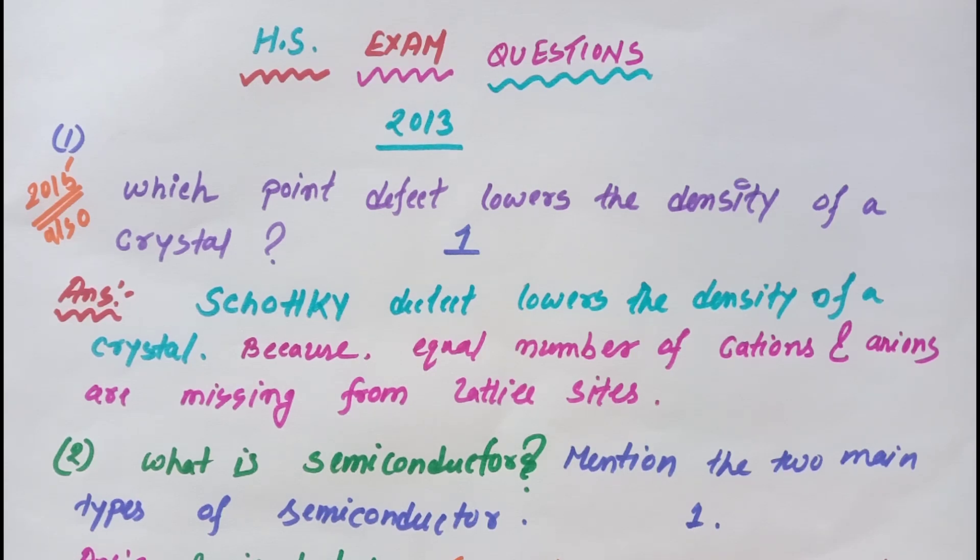The answer will be Schottky defect lowers the density of a crystal. Why? Because equal number of cations and anions are missing from their lattice sites.